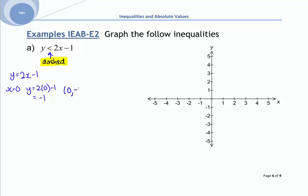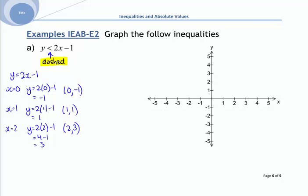If x = 0, y = 2(0) - 1 = -1, giving point (0, -1). If x = 1, y = 2(1) - 1 = 1, giving point (1, 1). If x = 2, y = 2(2) - 1 = 3, giving point (2, 3). Use a pencil because you're likely to draw solid lines instead of dashed ones — it helps if you can rub it out. The line should be dashed.